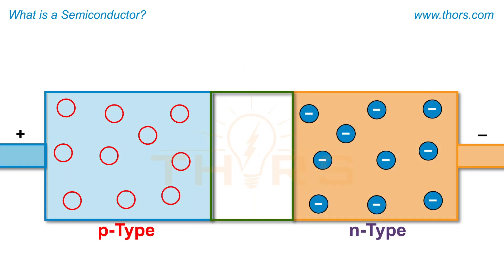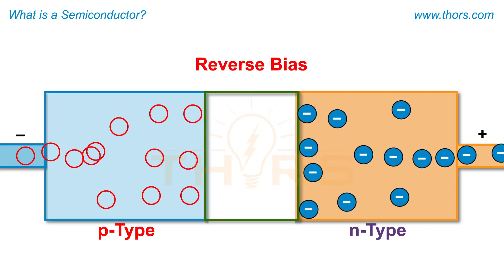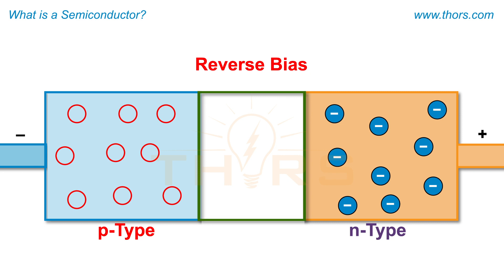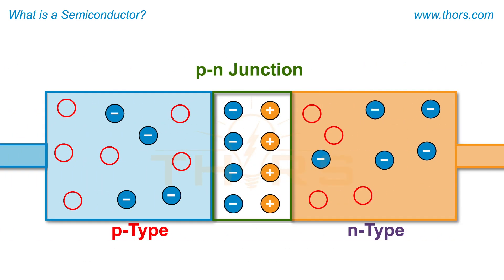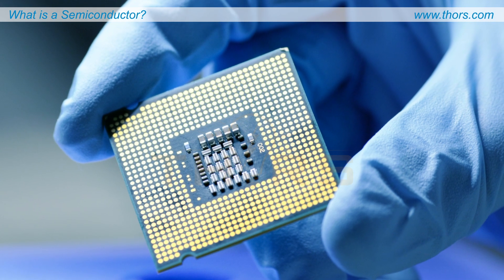A p-n junction conducts current when forward biased and acts as an insulator when reverse biased. For this reason, a p-n junction is also called a diode. The p-n junction has become the building block of semiconductor devices.